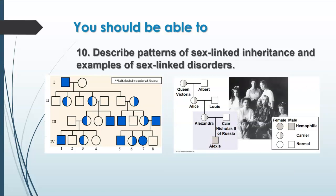Sex-linked inheritance is much easier to track on a pedigree, because you can see that almost all of the affected individuals are males. Sex-linked disorders include things like hemophilia — as shown with the Russian royal family — colorblindness, and Duchenne muscular dystrophy. The more common ones discussed are colorblindness, hemophilia in humans, and eye color in fruit flies.